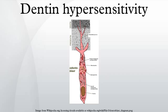Dentin hypersensitivity is a relatively common condition. Due to differences in population studied and methods of detection, the reported incidence ranges from 4 to 74 percent. Dentists may under-report dentin hypersensitivity due to difficulty in diagnosing and managing the condition. When questionnaires are used, the reported incidence is usually higher than when clinical examination is used. Overall, it is estimated to affect about 15% of the general population to some degree.